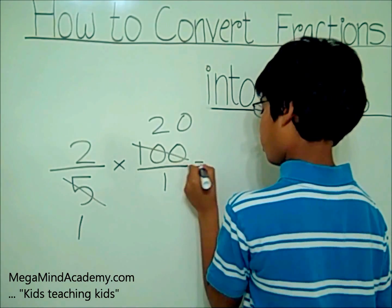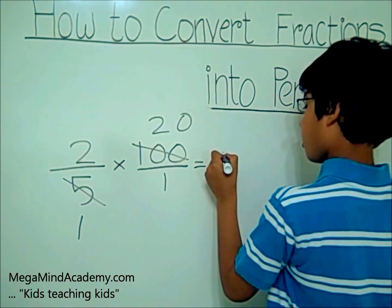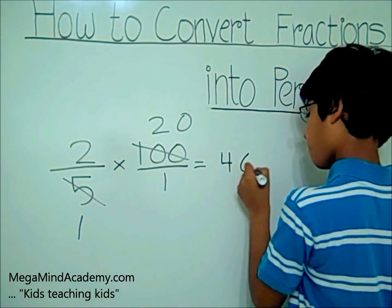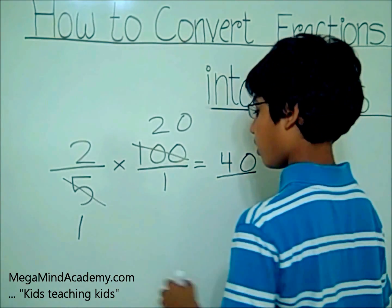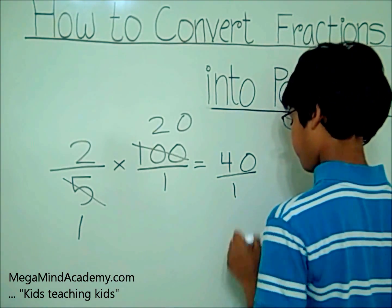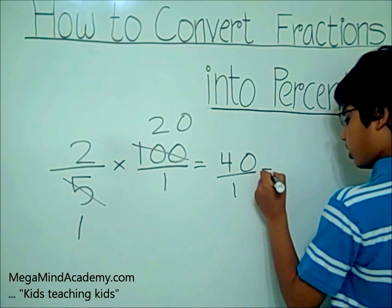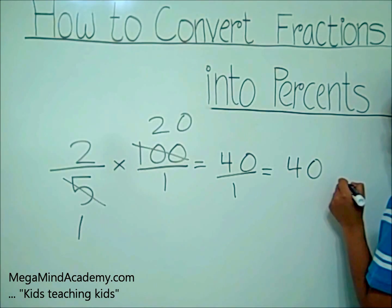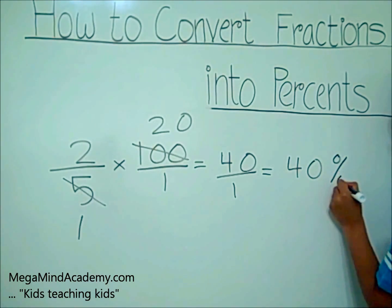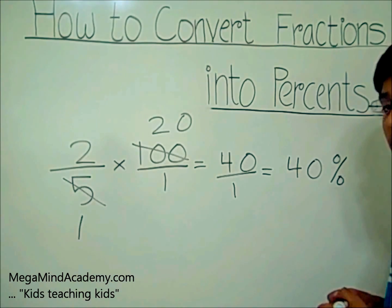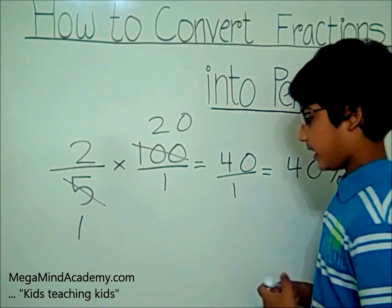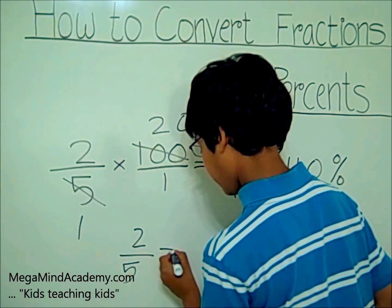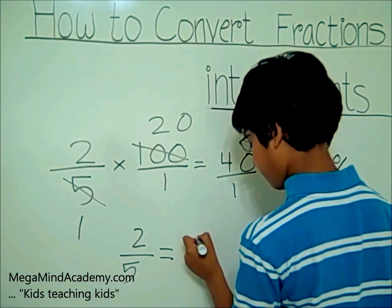Now you need to multiply two by twenty. It equals forty. Now you need to divide it by one times one, which equals one. That equals forty. So that means you have forty percent. So that means two-fifths equals forty percent.